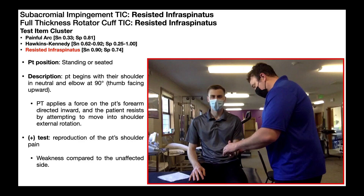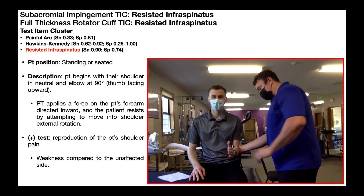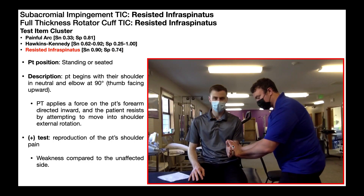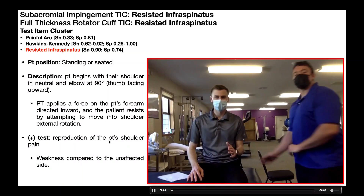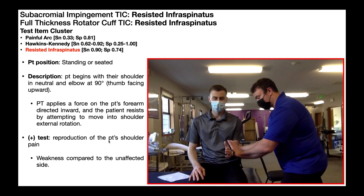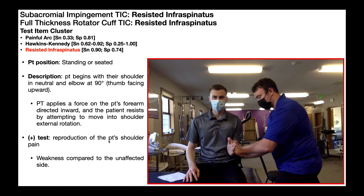The way you perform this test is identical to a manual muscle test. You can have the patient in standing or seated — I prefer seated. The patient begins with the shoulder in neutral: arm and elbow by the side, elbow bent to 90 degrees, thumb facing up. As the practitioner, I apply a force on the forearm trying to push it inward, and the patient resists by attempting to move the shoulder into external rotation. A positive test is reproduction of the patient's familiar shoulder pain, and we'll probably also see weakness on that side compared to the unaffected side.